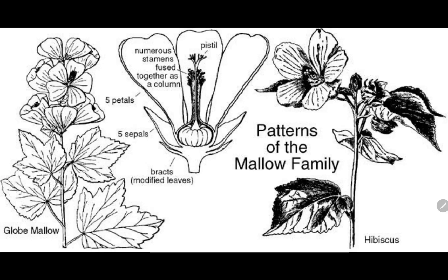These are pentamerous flowers — complete pentamerous — meaning having five petals, five sepals, and they also have bracts, meaning bracteoles. If you see this flower, it is hypogynous in nature; the floral parts are arranged at the base of the gynoecium. That is why we call it a hypogynous flower, or superior ovary.